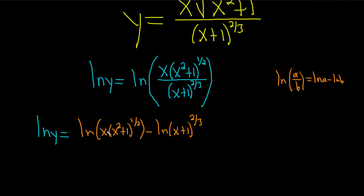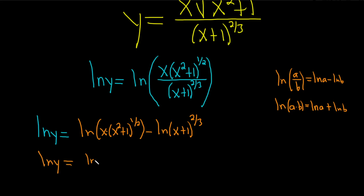Now we can use another rule called the product rule. Whenever you have the natural log of a times b, that's equal to the natural log of a plus the natural log of b. So we have ln of y equals ln of x plus ln of x squared plus 1 to the one-half, then minus ln of x plus 1 to the two-thirds.